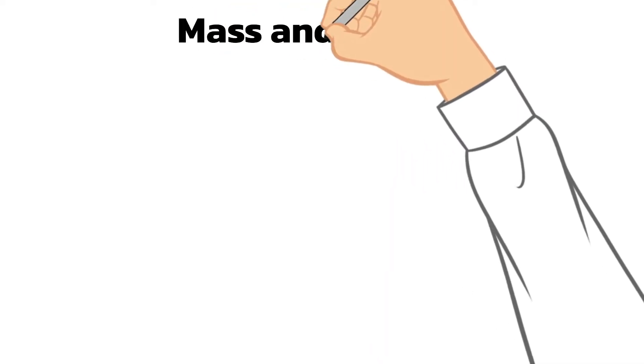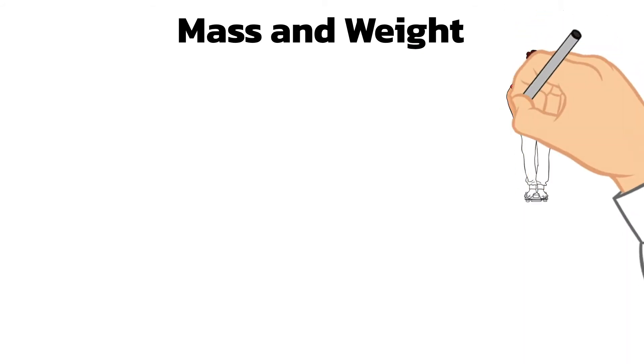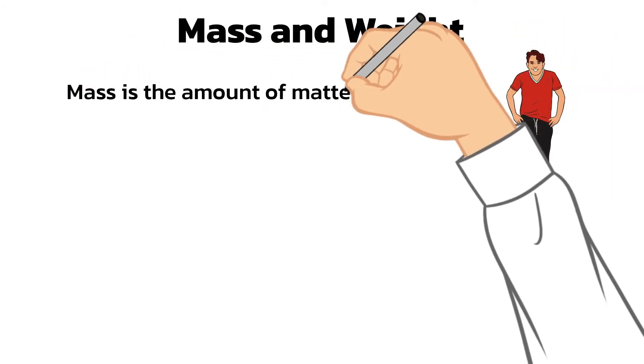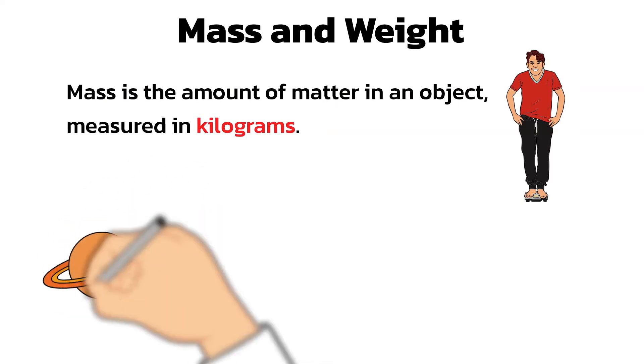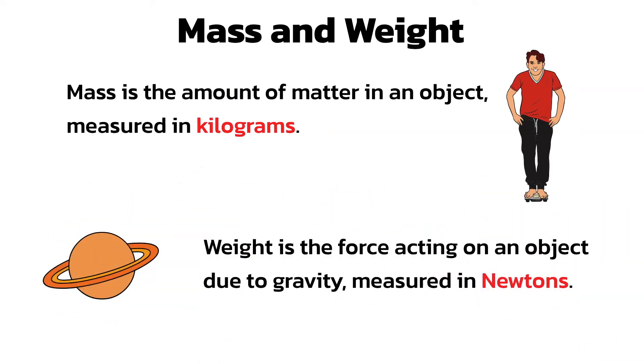In everyday life we use the words mass and weight to mean the same thing. However, in physics, there's an important difference between them. Mass is the amount of matter in an object, measured in kilograms. Weight is the force acting on an object due to gravity, measured in newtons.